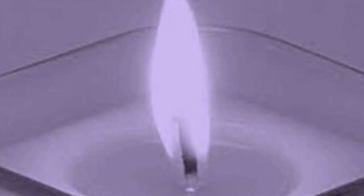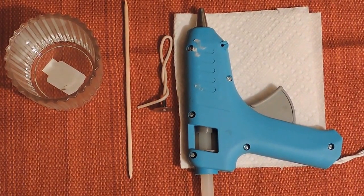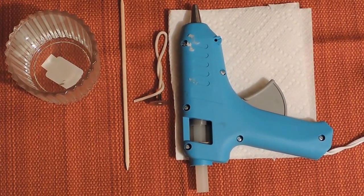So let's begin by looking at the tools we'll need to successfully set our wick. First, you'll need an empty glass jar container. Second, you'll need a stick long enough to allow you to manipulate the position of the wick base easily.